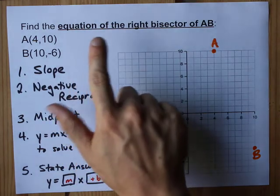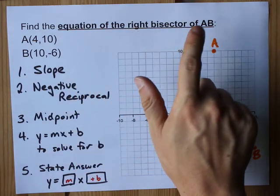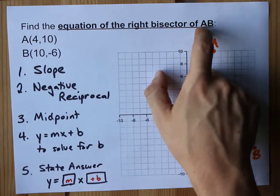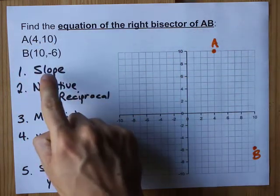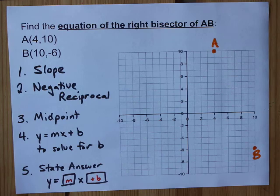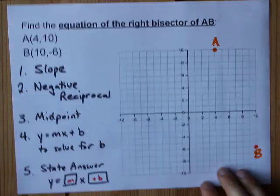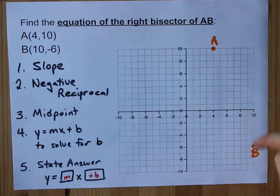Let's work together to find the equation of the right bisector of a line segment AB. We're given the coordinates of A and B, and I've plotted them here already. The right bisector will go through the midpoint of those two,